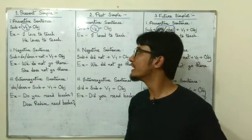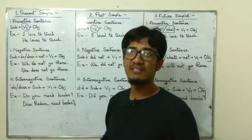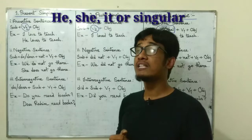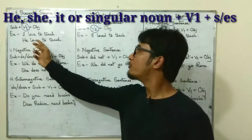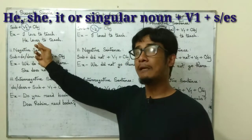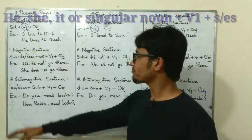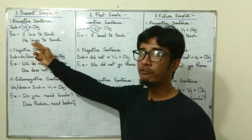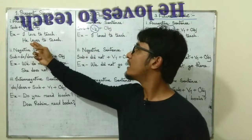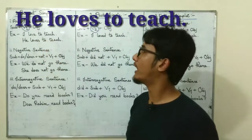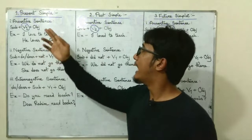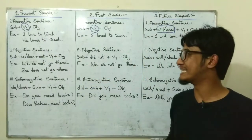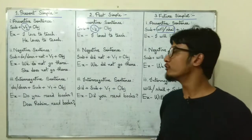A note: if the subject in present simple is he, she, or a singular noun, you will have to put an S or ES immediately after the verb. See the example: not 'he love' but 'he loves' — he loves to teach. I hope that you have understood assertive sentences in present, past and future simple quite easily.